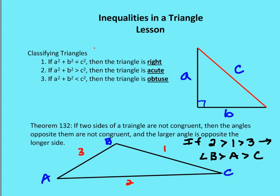Now when we talk about classifying triangles, we learned the Pythagorean theorem in another lesson. We said that if a squared plus b squared equals c squared, then the triangle is a right triangle. Now if a squared plus b squared is going to be greater than c squared, then it's acute. Let's think about what happens.